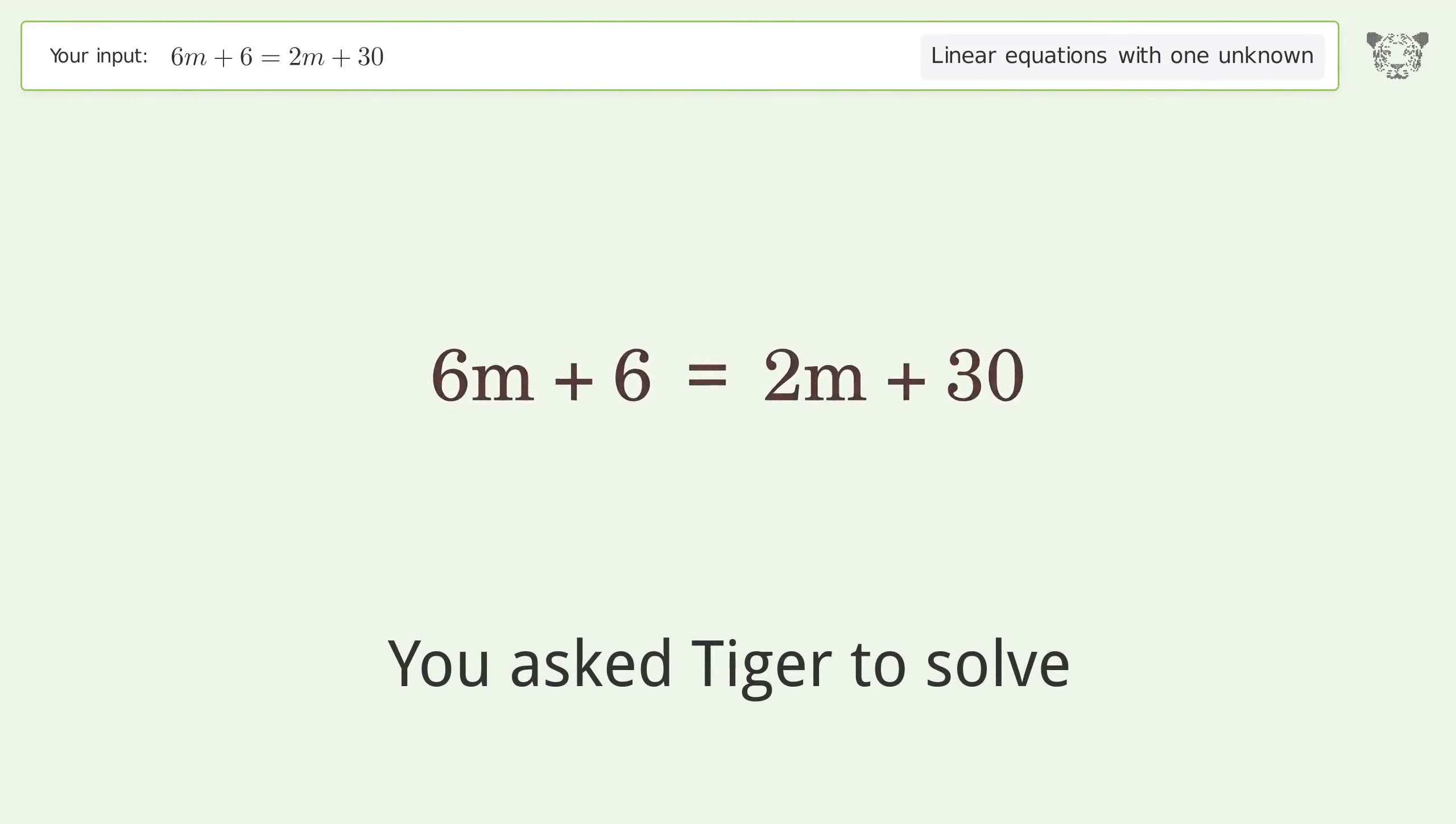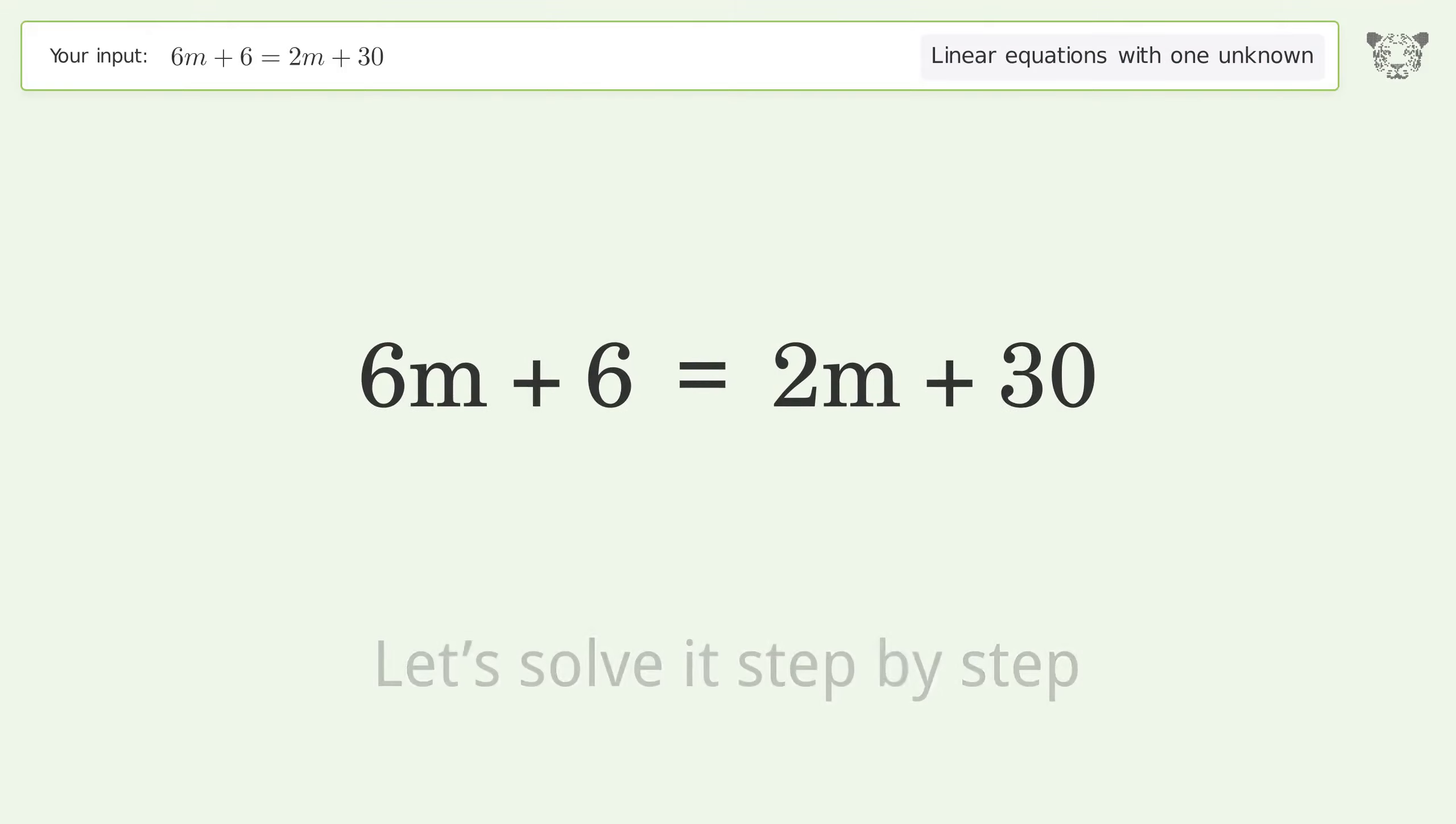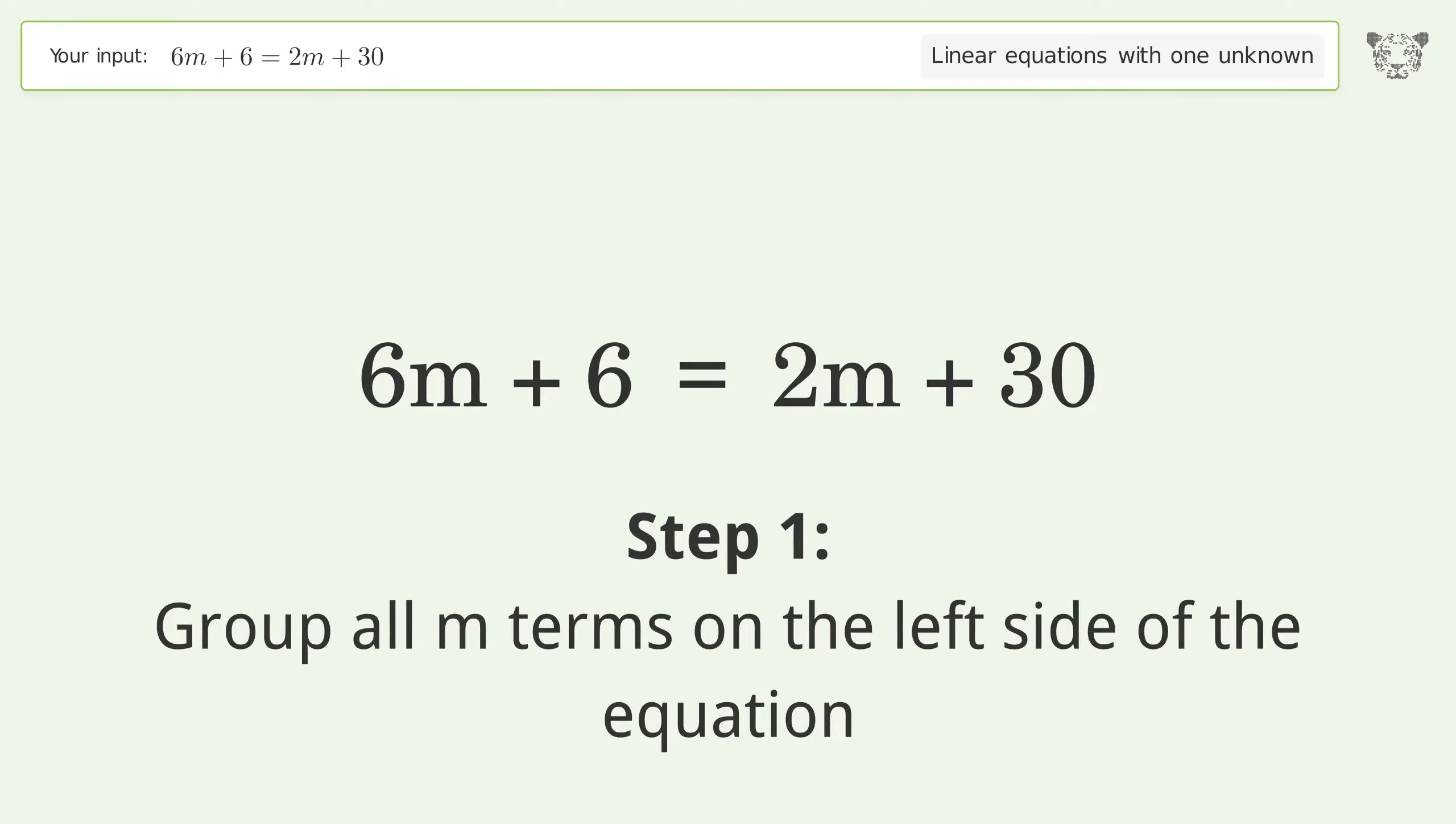This deals with linear equations with one unknown. The final result is m equals 6. Let's solve it step by step. Group all m terms on the left side of the equation.